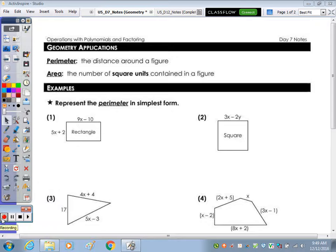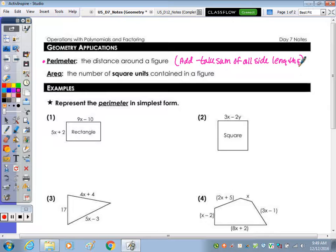Today we're going to apply the operations that we've done so far with polynomials to geometry. We're going to take a look at perimeter and area. Perimeter is the distance around a figure, so the operation we would do for perimeter is add or take the sum of all side lengths. For area, it's the number of square units contained in the figure and that's going to require some formulas.